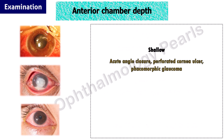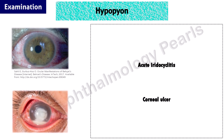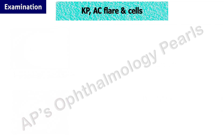The anterior chamber is shallow in acute angle closure, perforated corneal ulcer, phacomorphic glaucoma (a secondary angle closure due to an intumescent lens), and irregular in iridocyclitis with posterior synechiae. A hypopyon can be present in acute iridocyclitis and in a corneal ulcer. Hypopyon occurs due to iris inflammation, resulting in iris vessel hyperpermeability; leukocytes then settle at the bottom of the anterior chamber. In a severe corneal ulcer, associated iris inflammation may be due to toxins in a bacterial ulcer or fungal hyphae in a fungal ulcer, resulting in hypopyon formation.